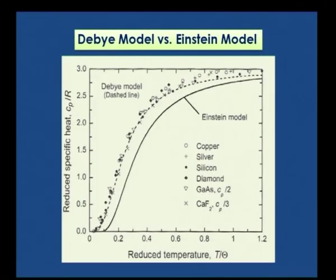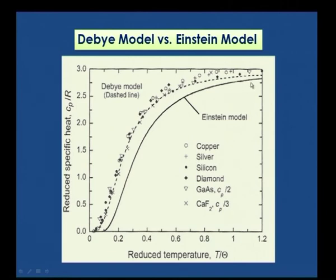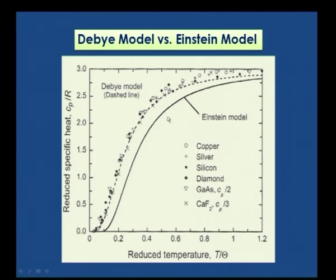They are not coupled to each other; they are independent oscillators. The variation of heat capacity with respect to temperature had an exponential fall according to Einstein's theory. The expression he obtained showed the fall was more rapid than what it should be. The continuous line gives the heat capacity calculated using the Einstein model, but experimental points indicate values for copper, silver, silicon and diamond as a function of temperature — shown by dots, squares, and circles.